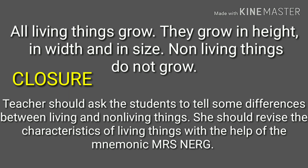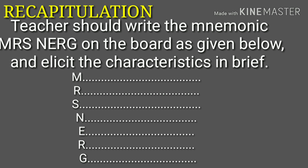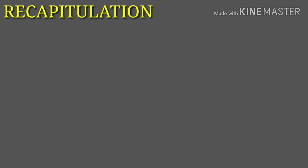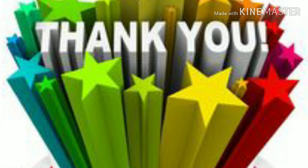After the procedure comes closure — the teacher should ask students to tell some differences between living and non-living things and revise all the characteristics of living things with the help of the mnemonic MRS NERG. In recapitulation, the teacher should write MRS NERG on the board and elicit the characteristics from children in brief, ask students to differentiate between living and non-living things using each characteristic, and ask for one example per characteristic, to assess whether children have understood the lesson.